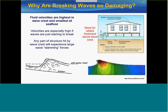The main issue is why are breaking waves so damaging? It's really the breaking waves that are the main cause of structural damage in storms. Fluid velocities are highest near the wave crest and much smaller near the sea floor. If any part of a structure gets hit by the wave crest region as waves start to break, you can develop very large wave-slamming forces. What FEMA recommends is to add substantial freeboard — get the first floor above the wave crest and then add additional margin of safety.